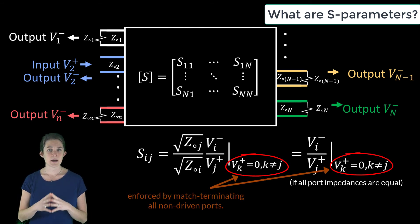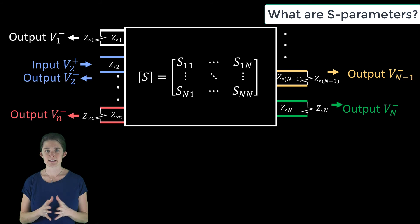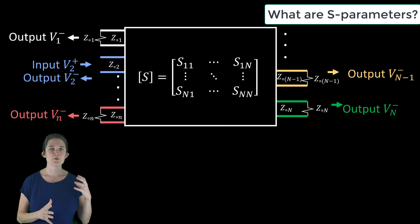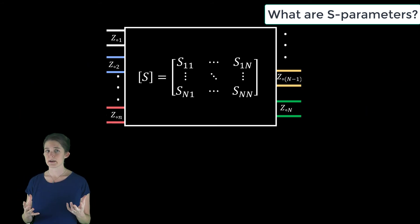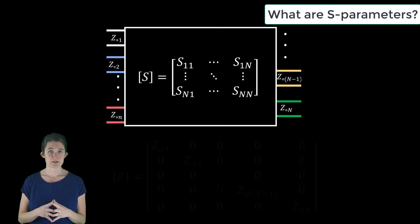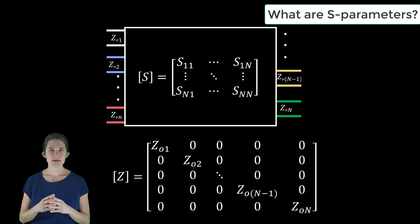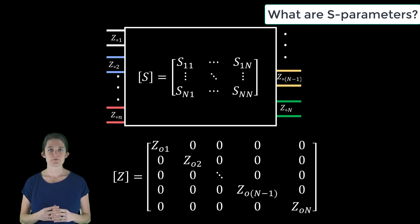The condition that vk-plus equals zero for all k not equal to j is satisfied through match termination of all non-driven ports. To fully characterize the system, you must know both its S-matrix and the characteristic impedances of all its ports, often described as a diagonal matrix. In the next lesson, we will work through the calculation of S-parameters for an example two-port network.